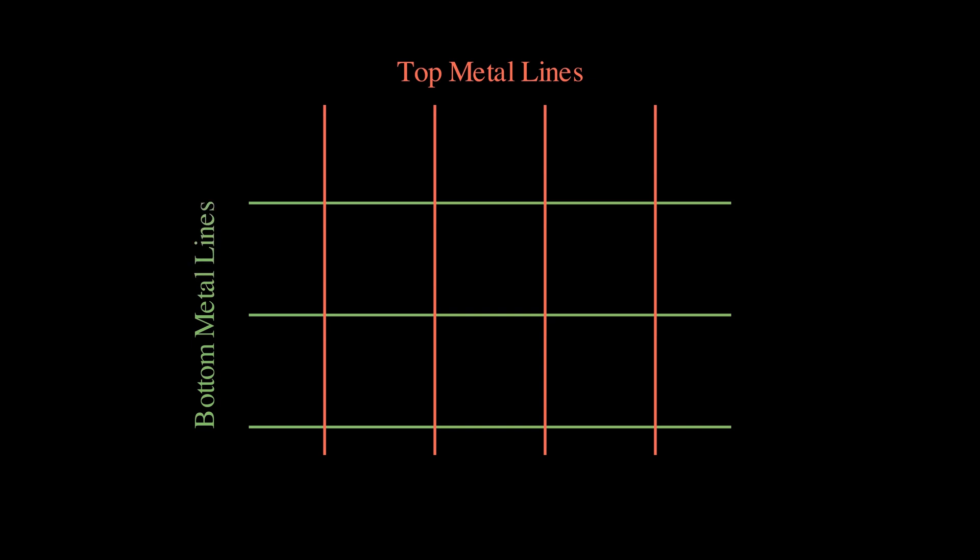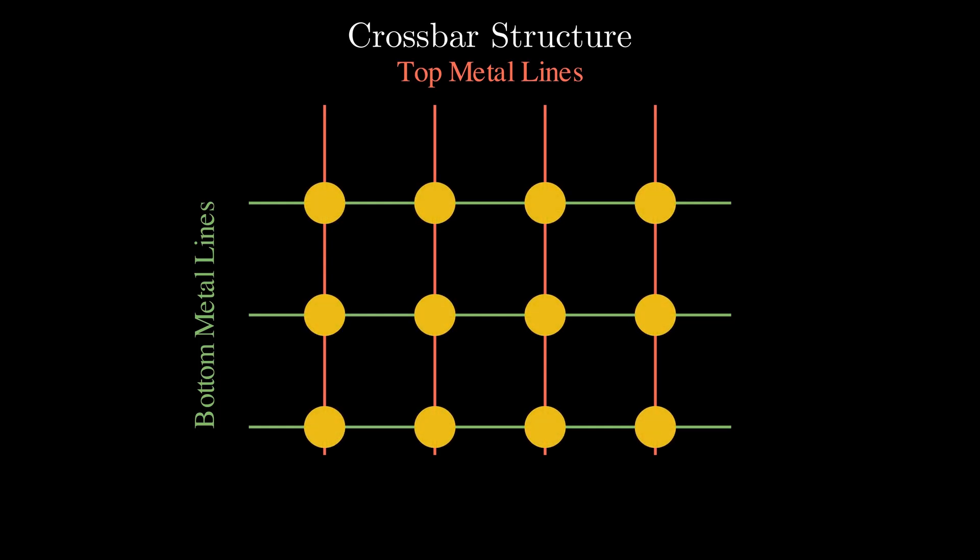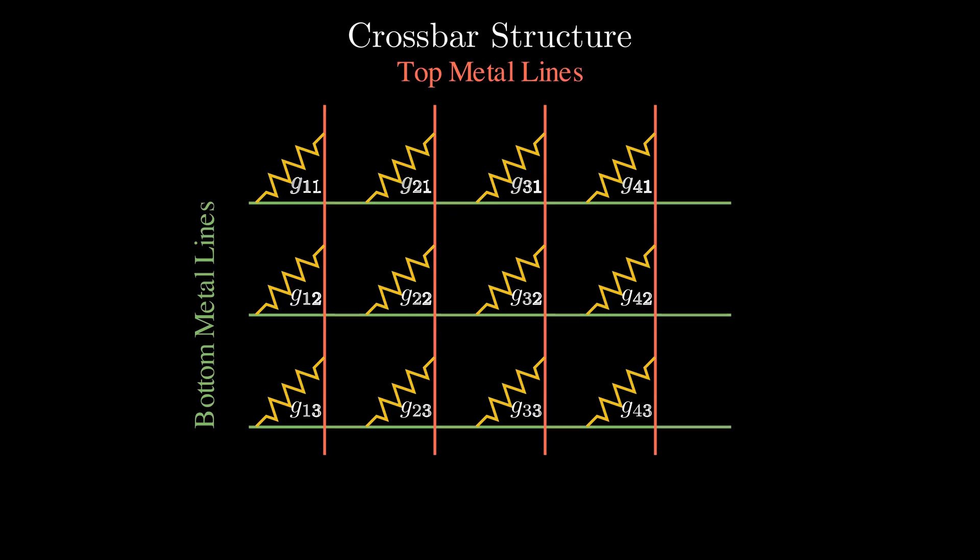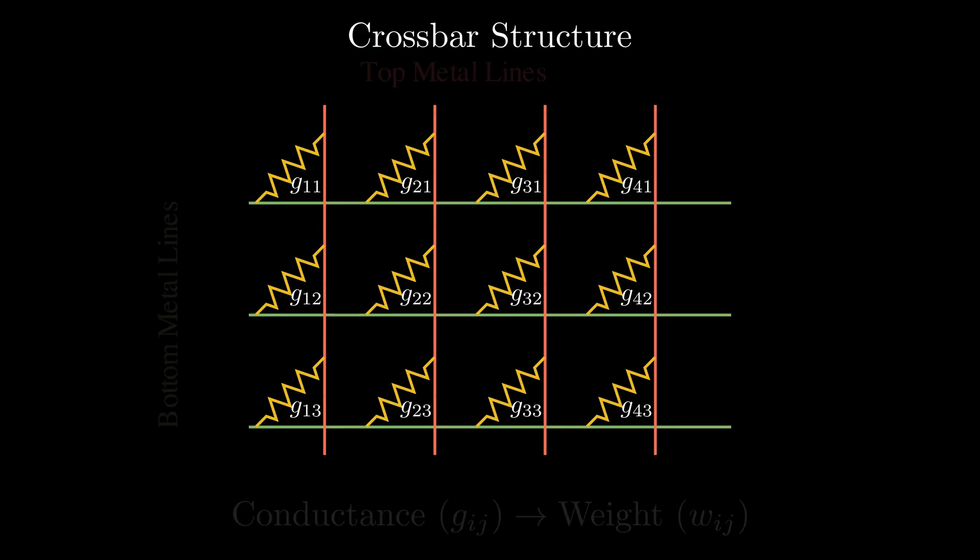Resistive memory devices can be arranged in a crossbar structure. In the setup, memory cells sit at the points where rows and columns of metal wires cross. Each cell connects one row to one column. By setting each cell to specific conductance value, an entire weight matrix is stored in the memory.